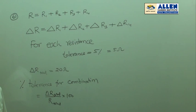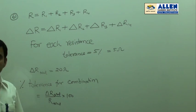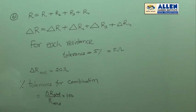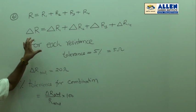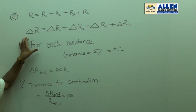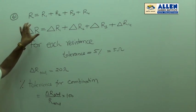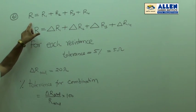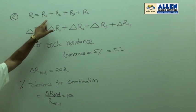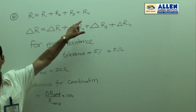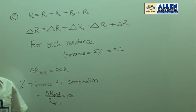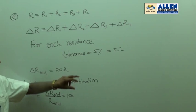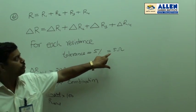In question number 61, four resistances each of 100 ohms are combined to form a 400 ohm resistance. They are added in series, so in series combination R equals R1 plus R2 plus R3 plus R4. The tolerance for each resistance is 5 percent, so for a 100 ohm resistance the tolerance will be equals to 5 ohm.